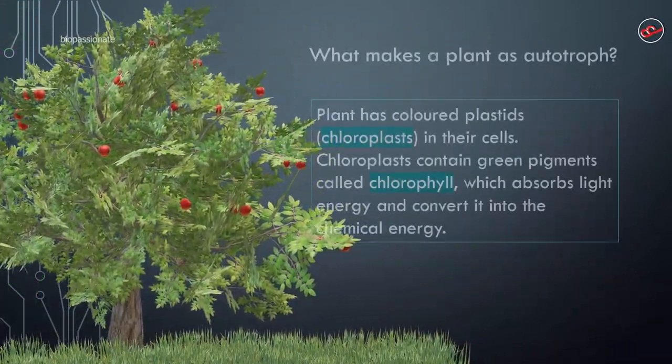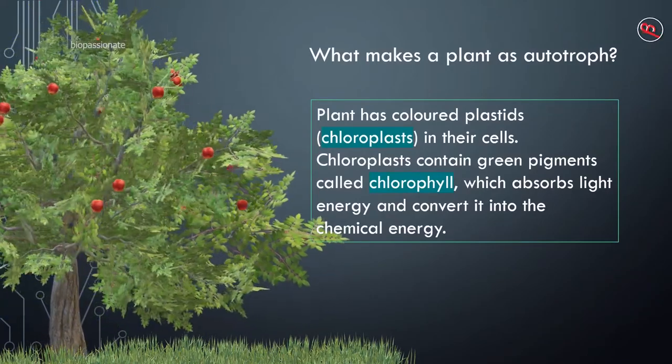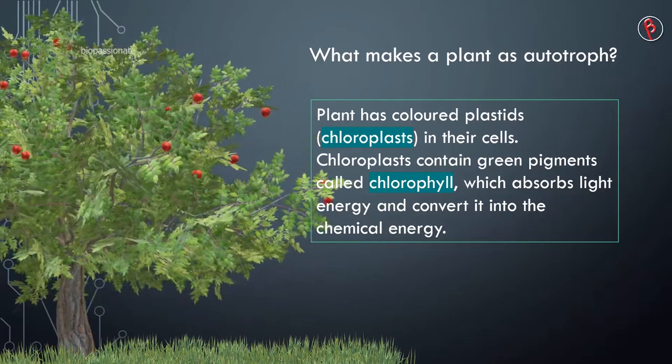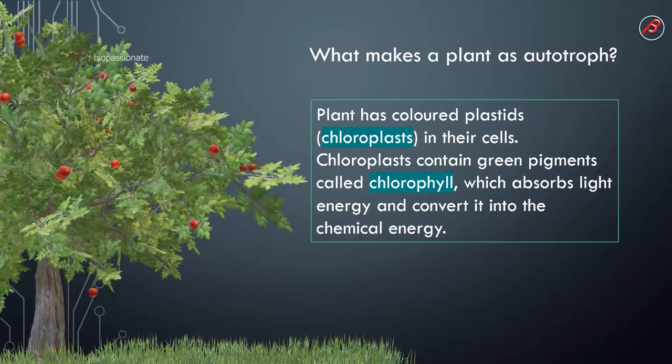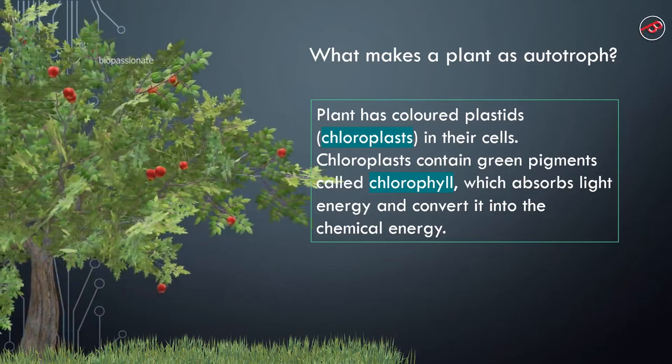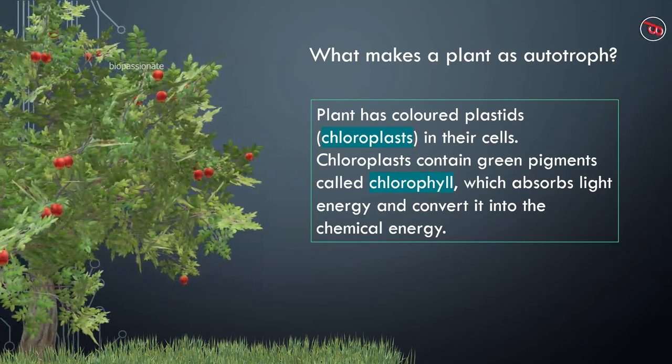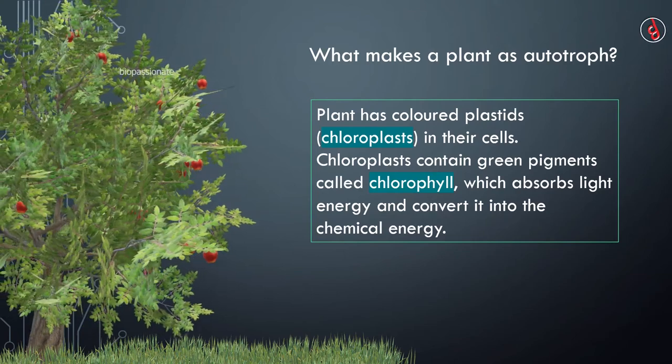What makes the plant as autotroph? Yes, plant has colored plastids called chloroplasts in their cells. Chloroplasts contain green pigments called chlorophyll. Chlorophyll is responsible for the green color of the leaves and imparts the green color to different parts of the plant body. The main function of chlorophyll is to absorb light energy and convert it into chemical energy.